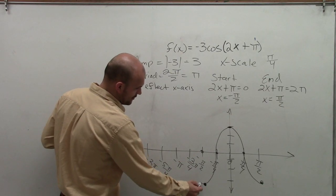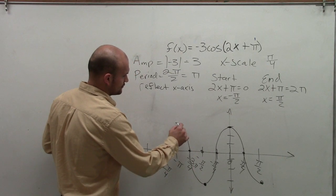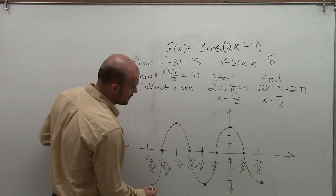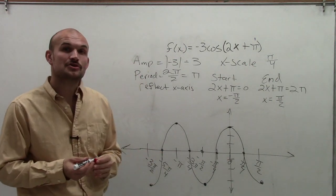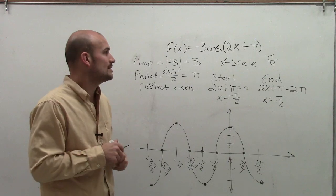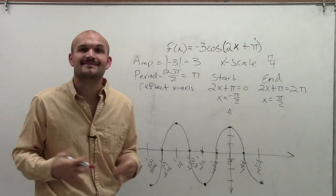And there you go, ladies and gentlemen. That is how you graph two periods of -3cos(2x + π). Thanks.